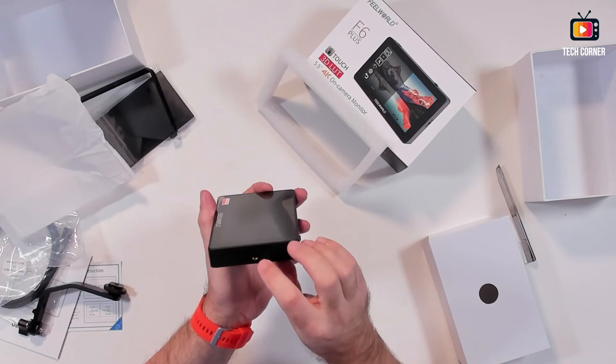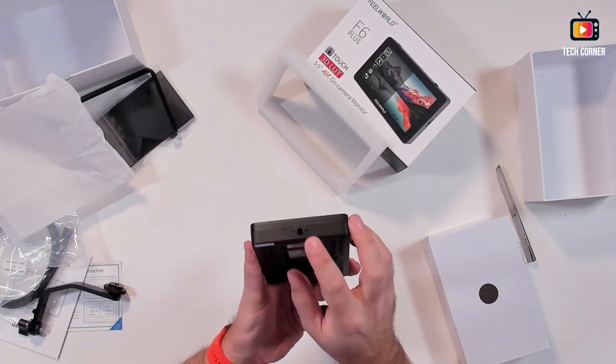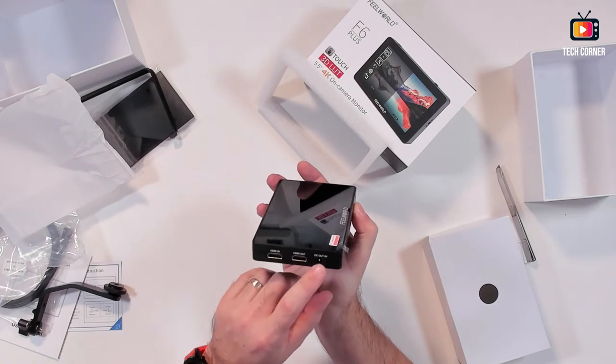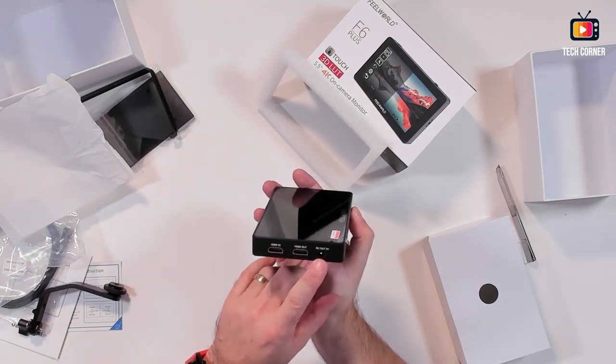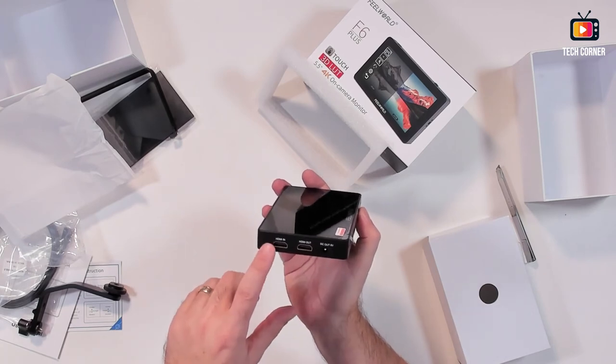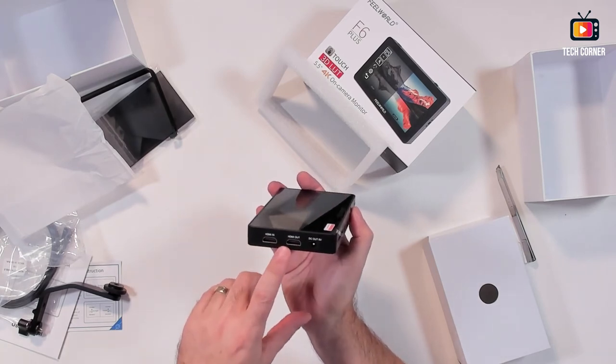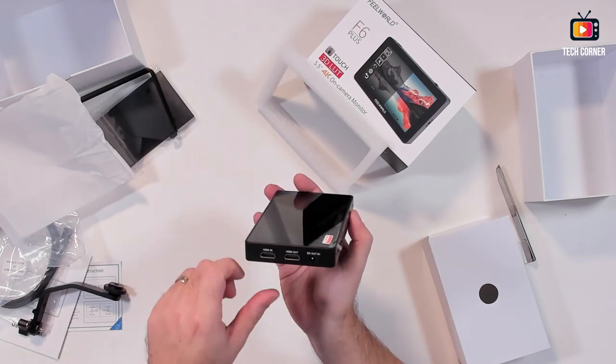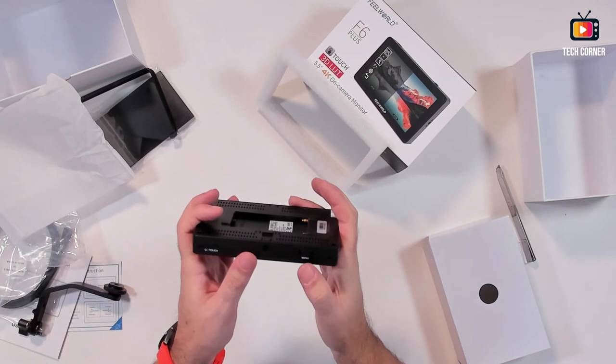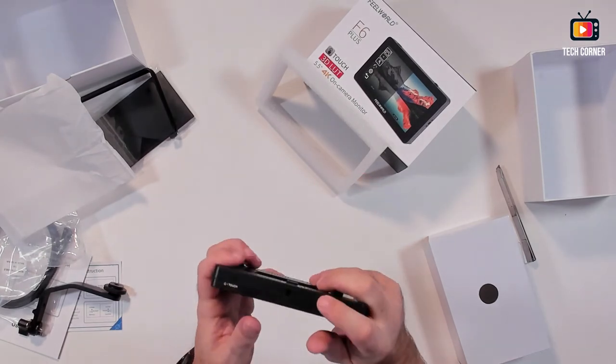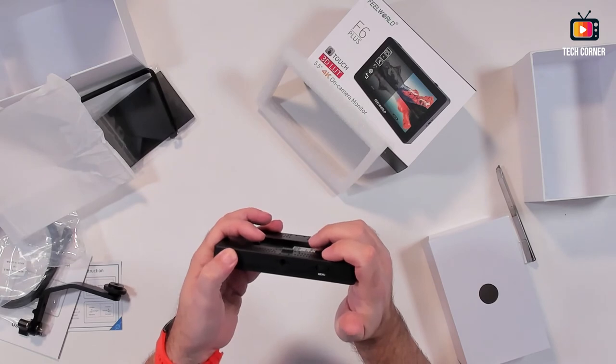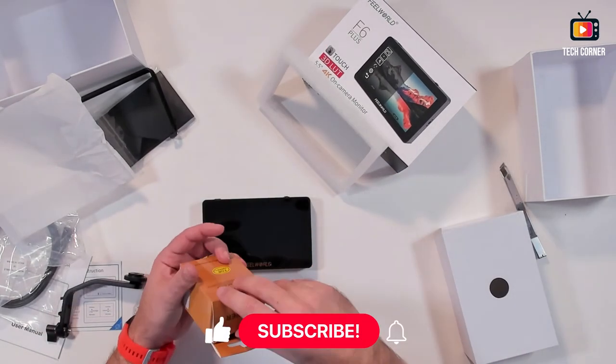Also on the right side you have a quarter inch screw hole, and in here you have a DC out 8 volts for powering the camera, and also a HDMI in and HDMI out. It will do a full loop. And on the top you have a menu selection and the on and off button.